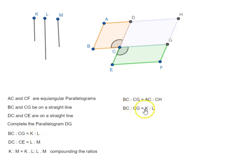If we combine these two, what do we get? BC is to CG. So that means AC is to CH is equal to K is to L, or K is to L is equal to AC is to CH.